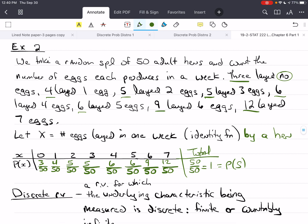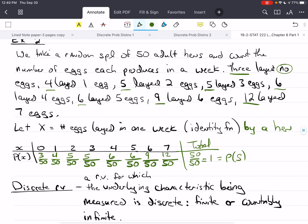Let's formally talk about a discrete random variable. It's a random variable for which the underlying characteristic that we're measuring is discrete. We talked about this back in chapter 1. Something's discrete if it's finite, just as the number of eggs here are, 1 through 7, so there's a finite number, or it's countably infinite. This is difficult for some students to grasp, so let's do an example of that.